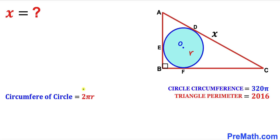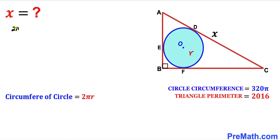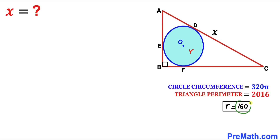Let's recall the circumference formula: circumference equals 2πr, where r is the radius. So we write 2πr = 320π. Dividing both sides by 2π to isolate r, the 2π cancels, and our radius r turns out to be 160 units. So the radius of this blue circle is 160.